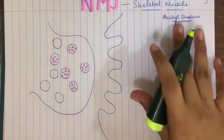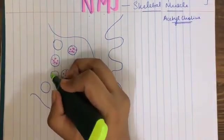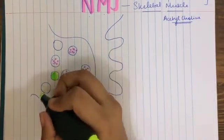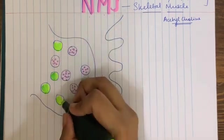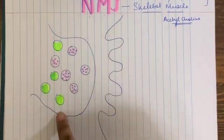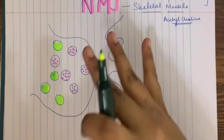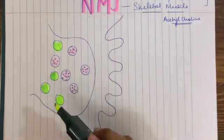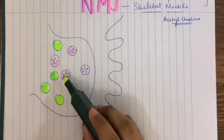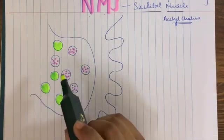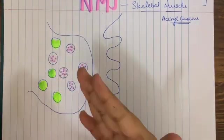Apart from acetylcholine, you will also see a lot of mitochondria. Mitochondria are required to produce ATP for the synthesis of this acetylcholine in the cytoplasm of the cell body of the neuron.